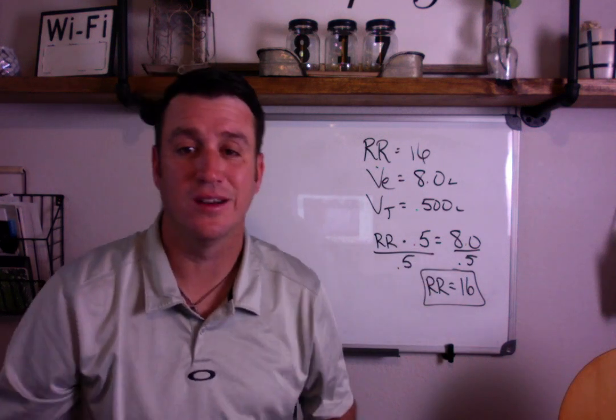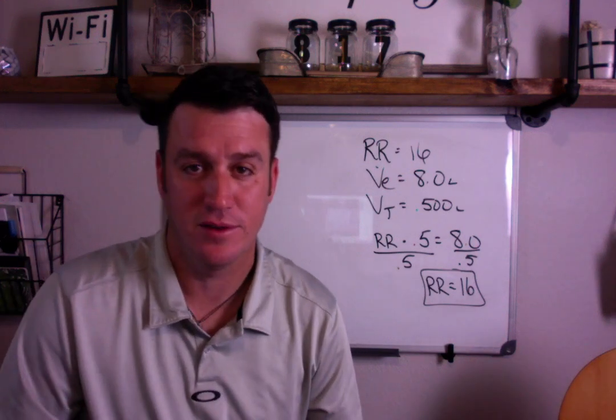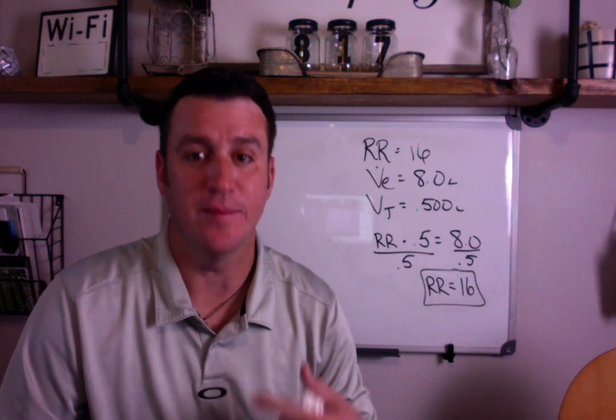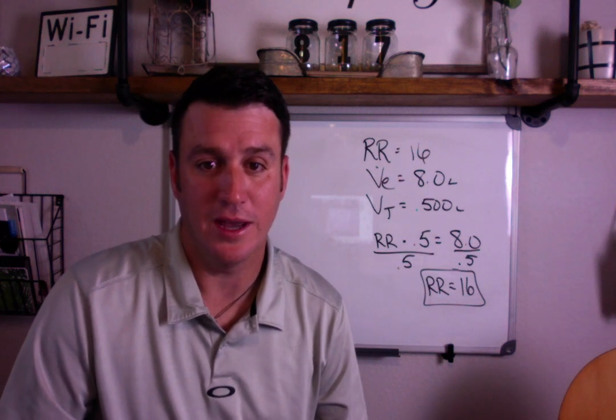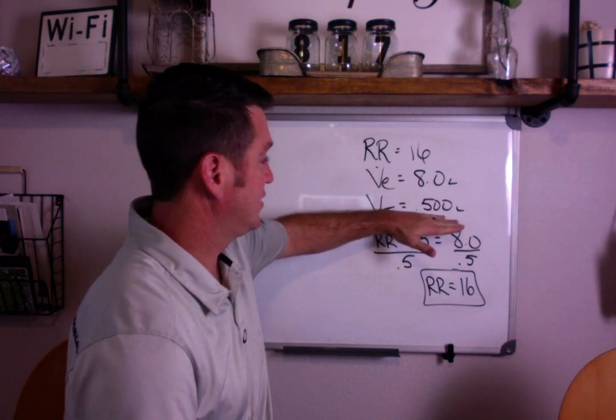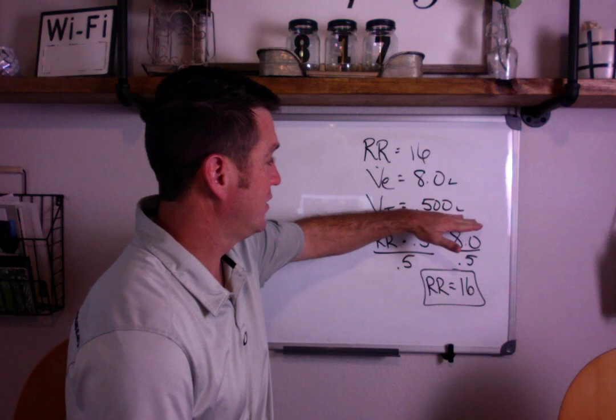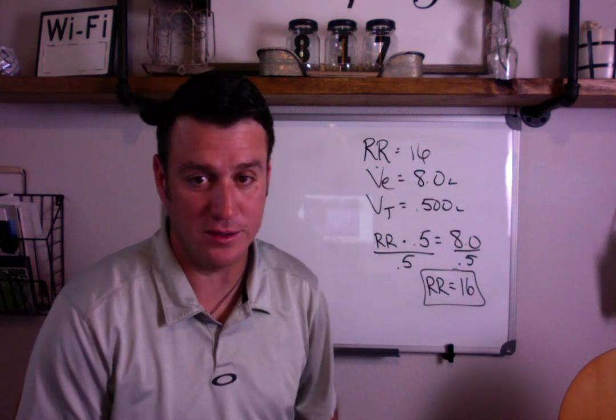Now, I'll give you guys a little trick here. Anytime you're multiplying something times 0.5, it's the same as dividing it by 2. So in this case, your respiratory rate is 16 times 0.5 liters, your minute ventilation is 8 liters per minute. I'll ask questions like that all the time.